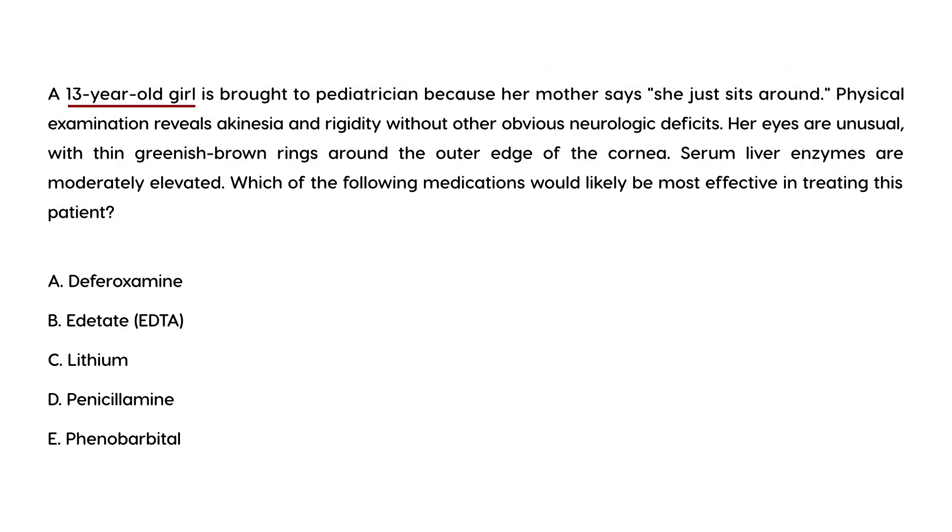A 13-year-old girl is brought to the pediatrician because she just sits around. Physical exam reveals akinesia and rigidity without other obvious neurologic deficits. Her eyes are unusual, with thin greenish-brown rings around the outer edge of the cornea. Serum liver enzymes are moderately elevated. This describes Kaiser-Flesher rings. The treatment of Wilson disease is lifelong with penicillamine, a chelating agent that binds to copper and eliminates it through the urine.